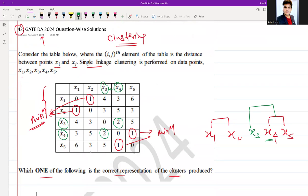After that, if you see the next minimum is 3, which is here and here. What is it? It is distance between x2 and x3 and x5. So x2, x3, x5 - x3 is also here, x5 is also here. It means that they are going to combine like this.